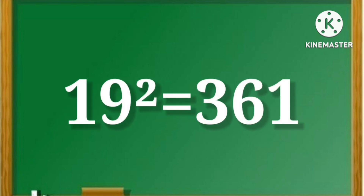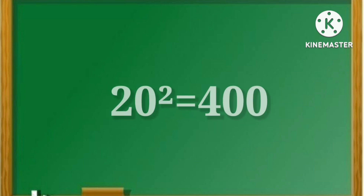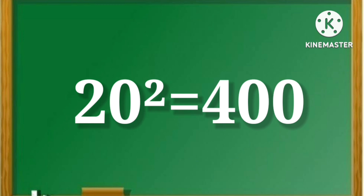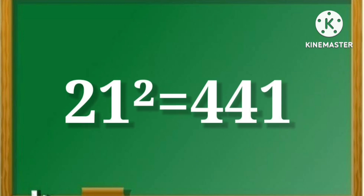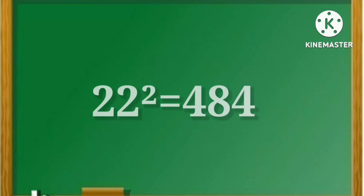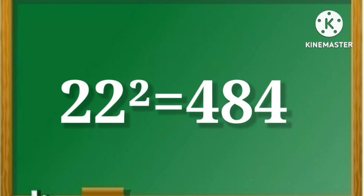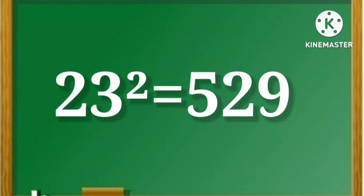19 square is equal to 361. 21 square is equal to 441. 20 square is equal to 484. 23 square is equal to 529.